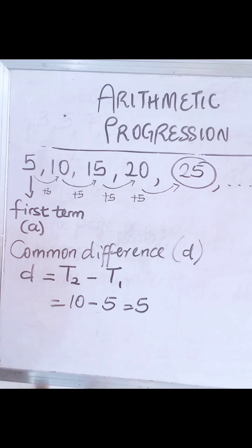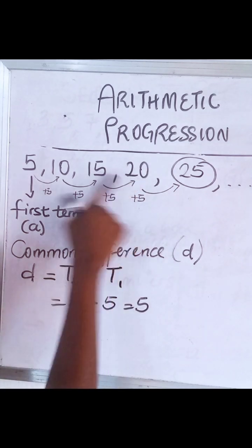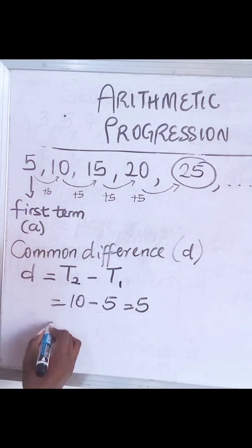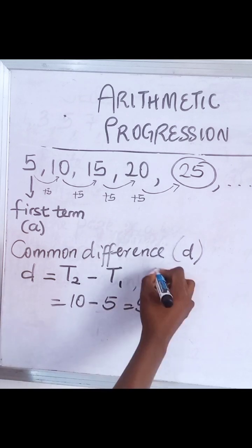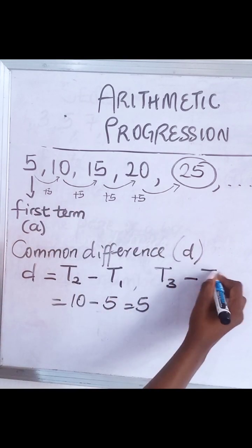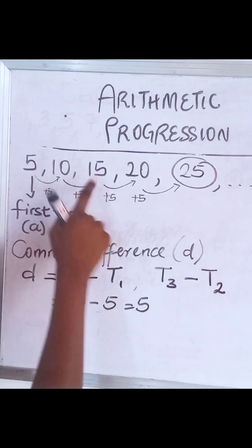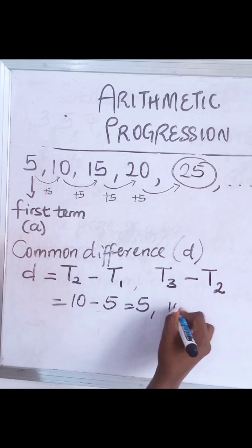We can also pick the third term. T3 minus your second term, T2. So your third term is what? Fifteen. T3 minus your second term.